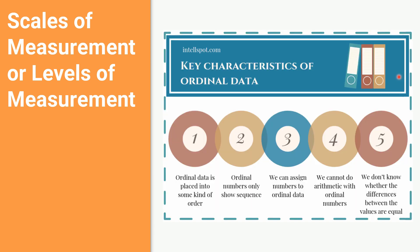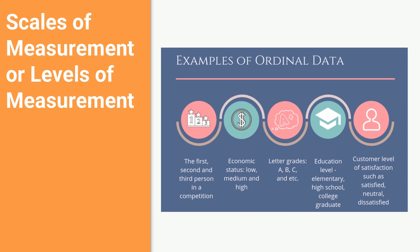Here are the key characteristics of ordinal data. First, ordinal data is placed into some kind of order. Second, ordinal numbers only show sequence. Third, we can assign numbers to ordinal data. Fourth, we cannot do arithmetic with ordinal numbers — we can only compare the data. Fifth, we don't know whether the differences between the values are equal or not; we just know the rank or level of the data.